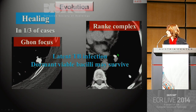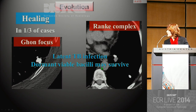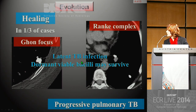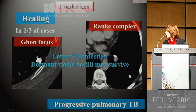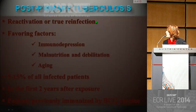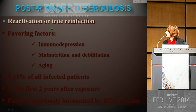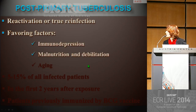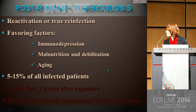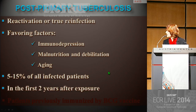Despite the development of specific immunity, very frequently there are dormant viable bacilli that survive — this is called latent TB infection. In cases of inadequate immune response, there is progressive pulmonary TB. Post-primary tuberculosis mainly occurs as a reactivation, especially in periods of immunodepression, malnutrition, debilitation, or as a result of aging. Five to 15% of all infected patients may be concerned, and most frequently it occurs in the first two years after exposure.